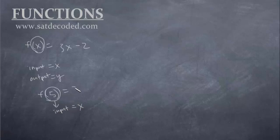So f(5) equals 3 times 5 minus 2 which is 15 minus 2 gives us 13, and 13 is our output which is y.